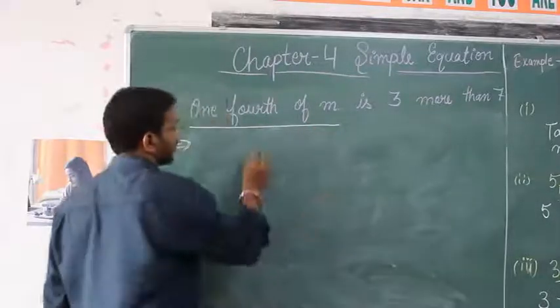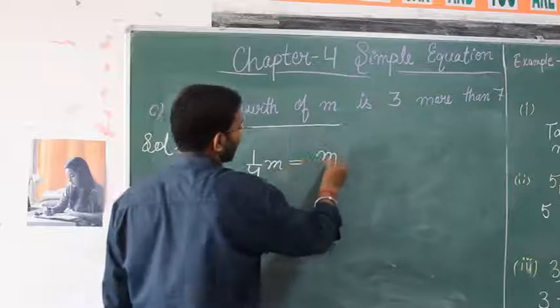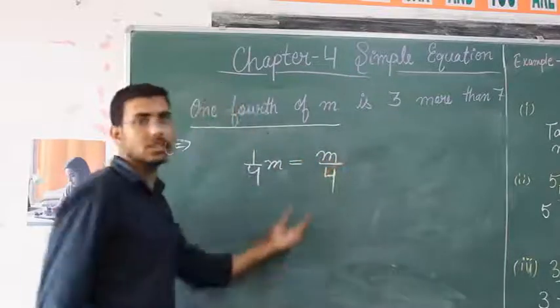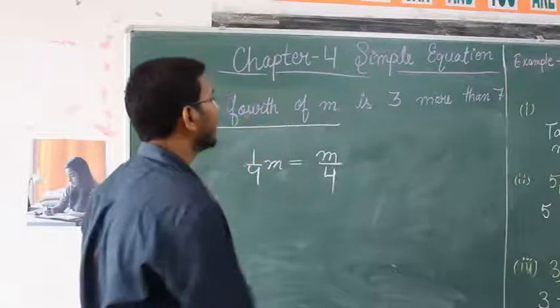One fourth of m means 1 by 4 m, or we can write it as m by 4. This is one fourth of m is 3 more than 7.